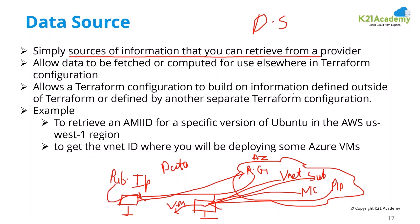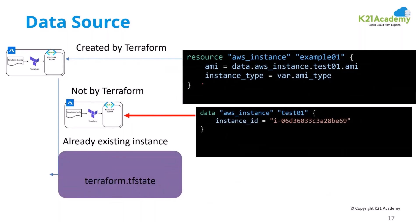There are two different cases to understand. In the first case, a resource block is used — meaning Terraform is creating the instance, so it can create, update, and destroy it. In the second case, a data block is used instead of a resource block for the same resource type. In this case, the resource already exists; using data, you are only fetching its information into the state file. You can only read — you cannot update or destroy.